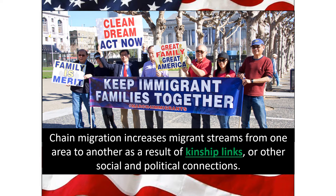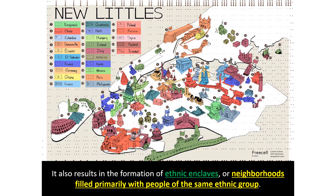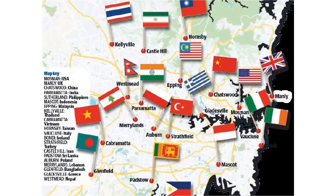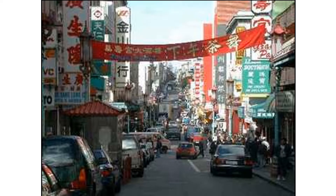In the 1800s, many Italians moved to cities like Boston and New York, which is why there are Little Italys there — because Italians were already living there. This formation of ethnic enclaves or neighborhoods filled primarily with people of the same ethnic group has happened in cities across the US. Here's a map showing different ethnic neighborhoods around Sydney, Australia, where groups settled in different parts of the city to be near people who share their culture. Famous examples include Chinatown, with the biggest ones in New York and San Francisco.